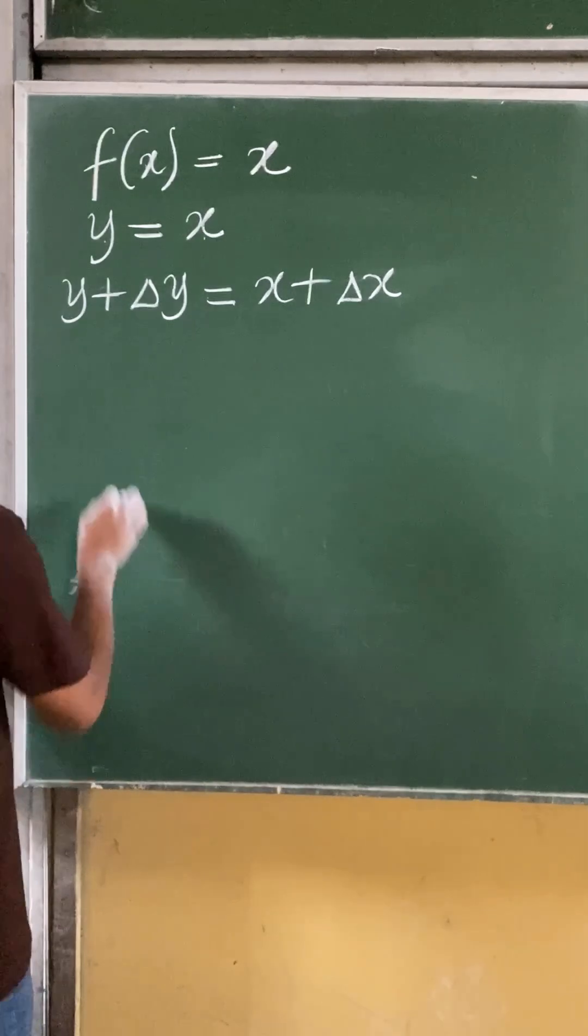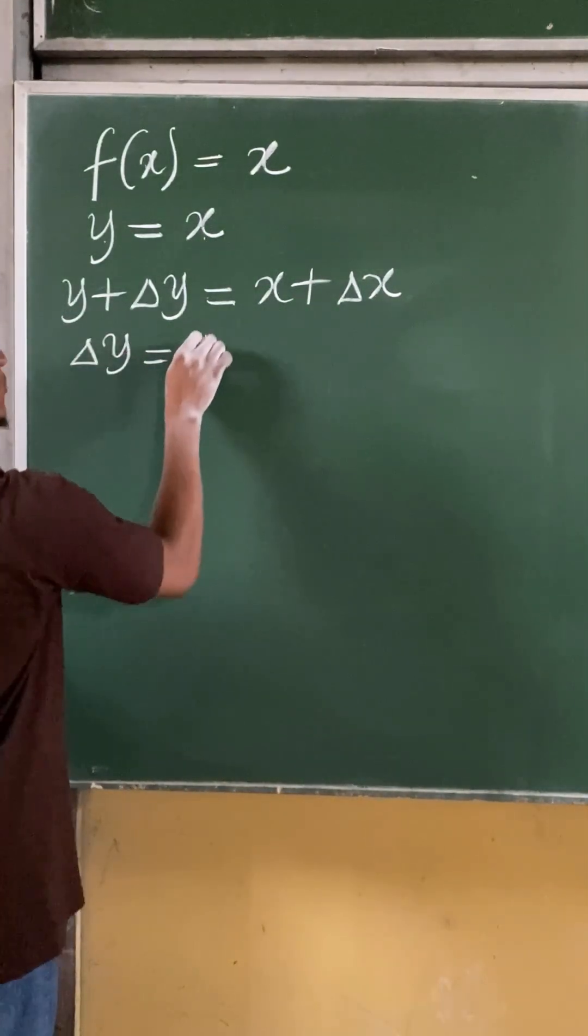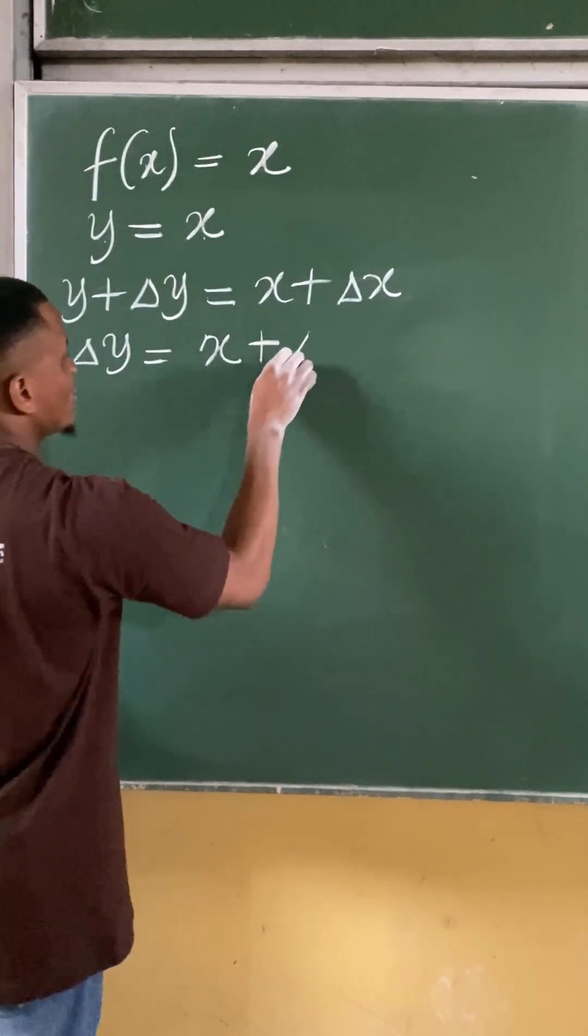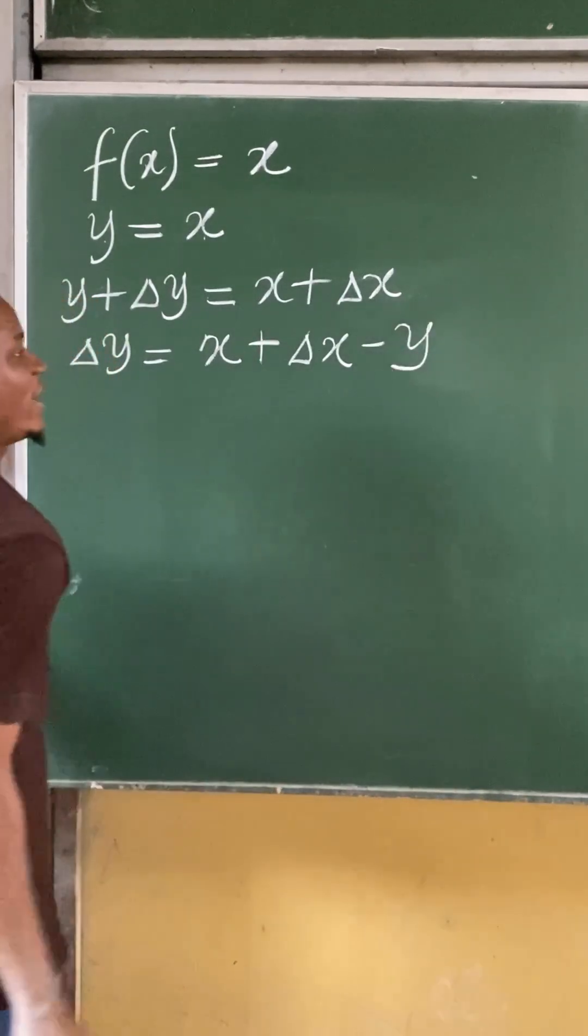My next task is to move y over here. So I'll have change in y is equal to x plus change in x minus y. So y comes over here becomes minus y.